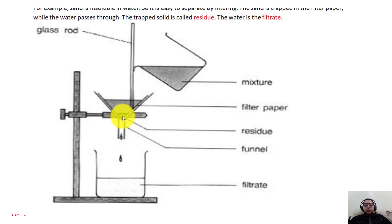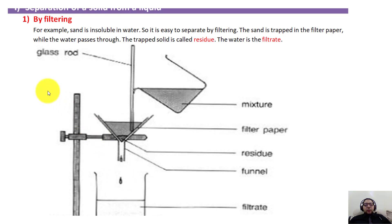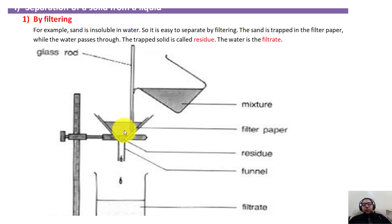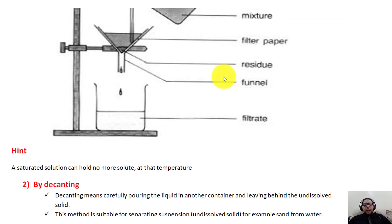When we pour the mixture, only particles smaller than the filter paper holes will pass through, while particles larger than the holes are blocked on top. The solid that is removed by filtration is called the residue, and whatever passes through the filter paper is called the filtrate. This process is used to separate undissolved solids — for example, sand is insoluble in water, so it's trapped in the filter paper while the water passes through as filtrate.